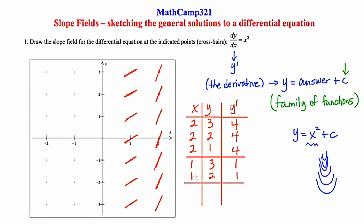The next column has all x values of 0. Starting at the top with (0, 3): if I plug 0 in, I get 0 squared, which is 0. A slope of 0 indicates a horizontal segment, so all of these are going to be horizontal.